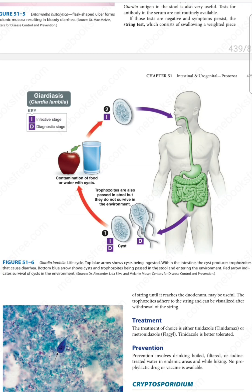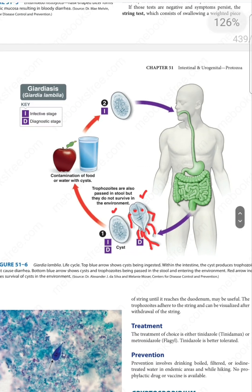There are two stages: the trophozoite stage and the cyst stage, which is basically involved in the transmission of disease. The cyst can survive outside the host but the trophozoite cannot. The trophozoite stage shown is a pear-shaped structure with two nuclei and four pairs of flagella. The suction disc helps it adhere to the intestinal wall.